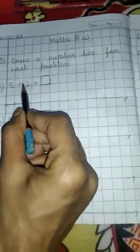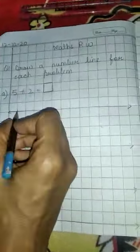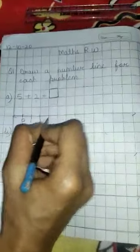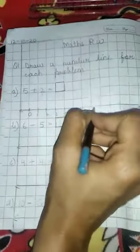5 plus 2. Agar plus ki number line hoti hai to hum aage jaate hai. Minus ki hoti hai to hum piche jaate hai. Okay. So first number is. First we will make the number line. Zero se start karte hai number line. 1, 2, 3, 4, 5, 6, 7, 8, 9 and 10. Okay.